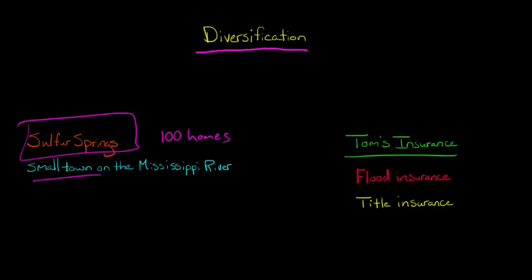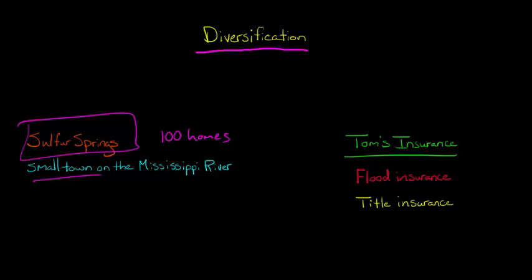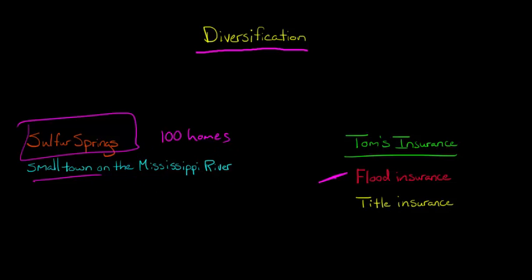When you buy this home, the bank requires that you get insurance. So you go over to Tom's Insurance and you get two types of insurance: flood insurance in case the Mississippi River floods and damages your home, and title insurance. Let's say there's a 2% chance there will be a flood that damages your home and a 2% chance that you will have some kind of problem with your title.